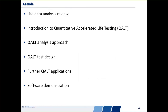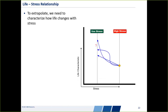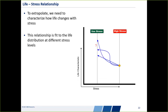Now we'll talk about how the analysis actually works. We know there is a life-stress relationship — we have failures at a high stress level and need to characterize how that translates to the use stress level. In the picture, there are proposed relationship forms — a squiggly line, a straight line, an exponential relationship. We take high stress level, medium stress level, and so on, and fit a relationship to those points so we can estimate the life distribution at the use stress. Once we have that life distribution at the use stress, we can answer all those reliability questions.